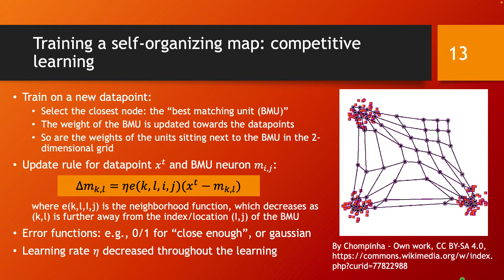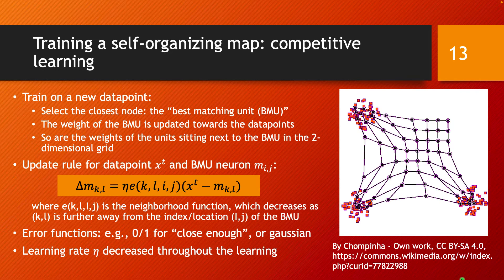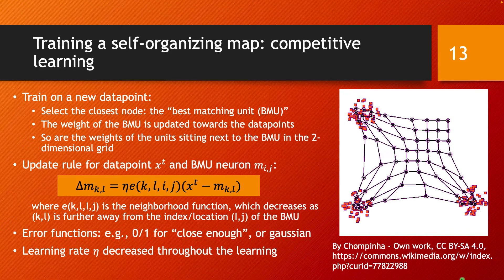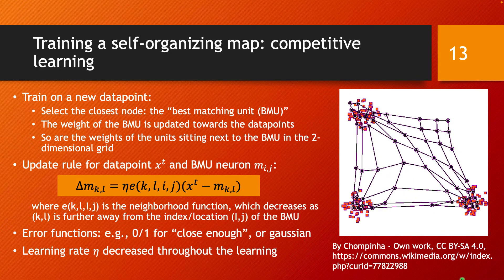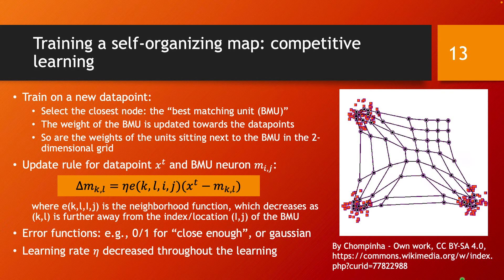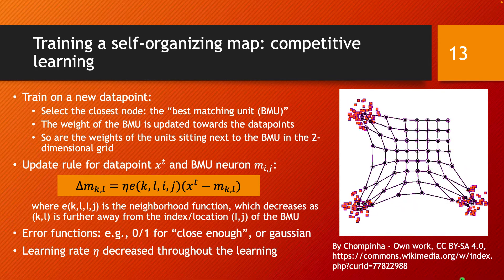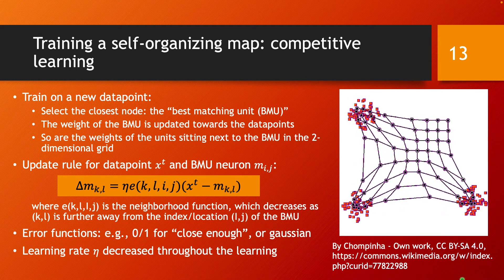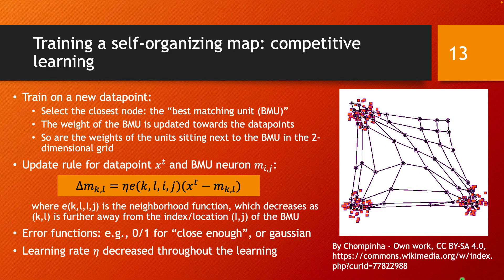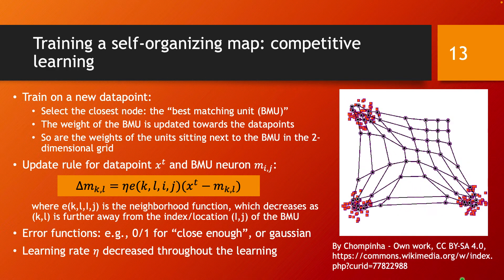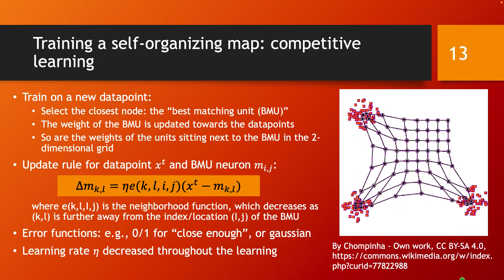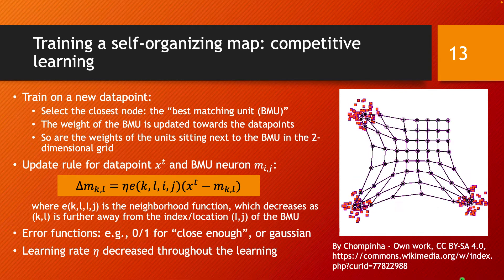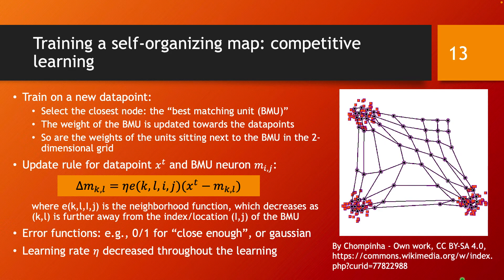When you start training on a new data point, as we've seen in online k-means and adaptive resonance theory, you select the closest node. Each node in this neural network has an associated weight vector with the same dimensionality as the data point. Evaluating the distance between a training data point and a node is straightforward using, for example, the Euclidean distance. You select the closest node in the D-dimensional space — this is the so-called best matching unit, or BMU.